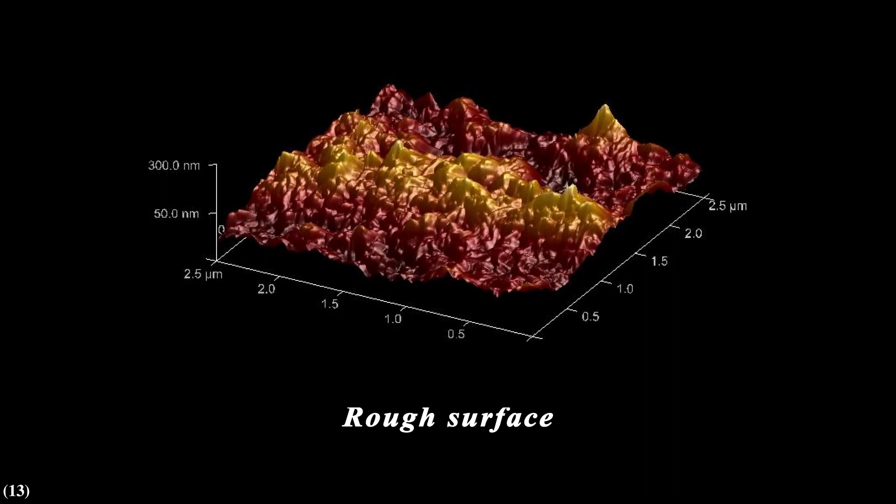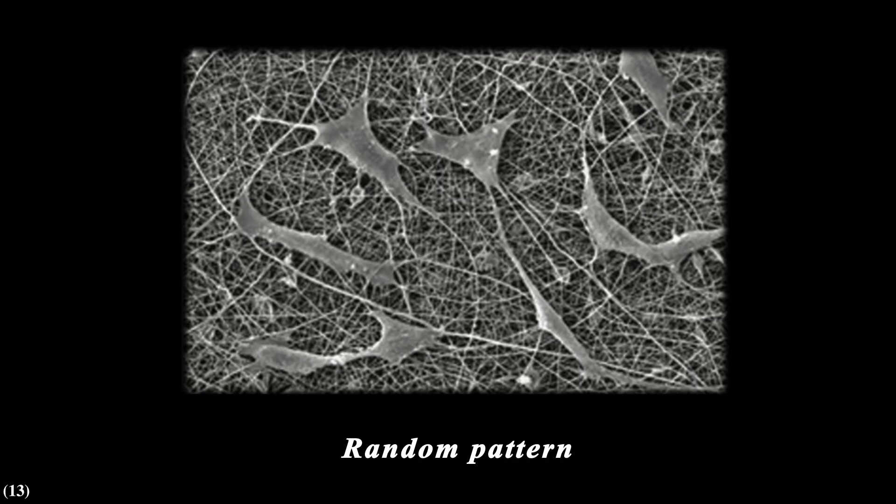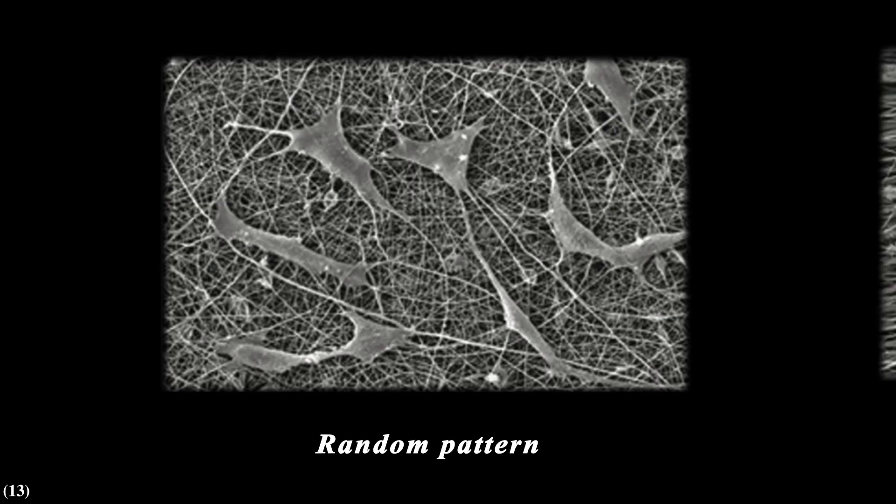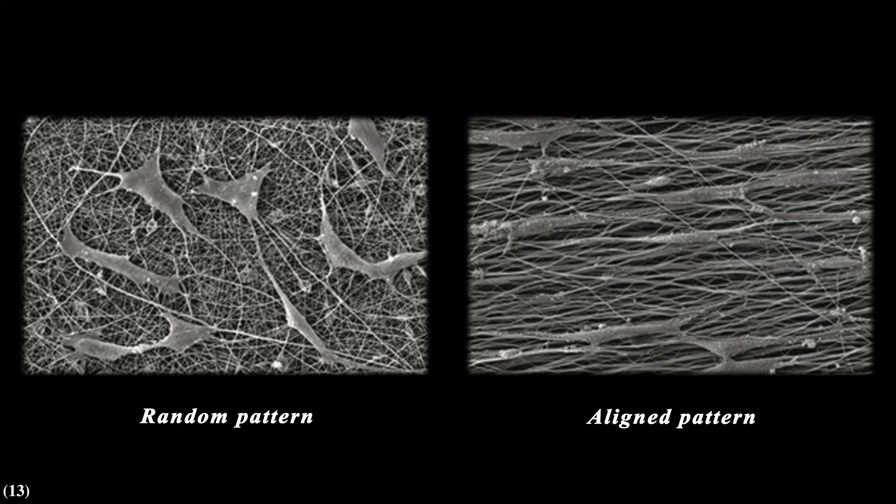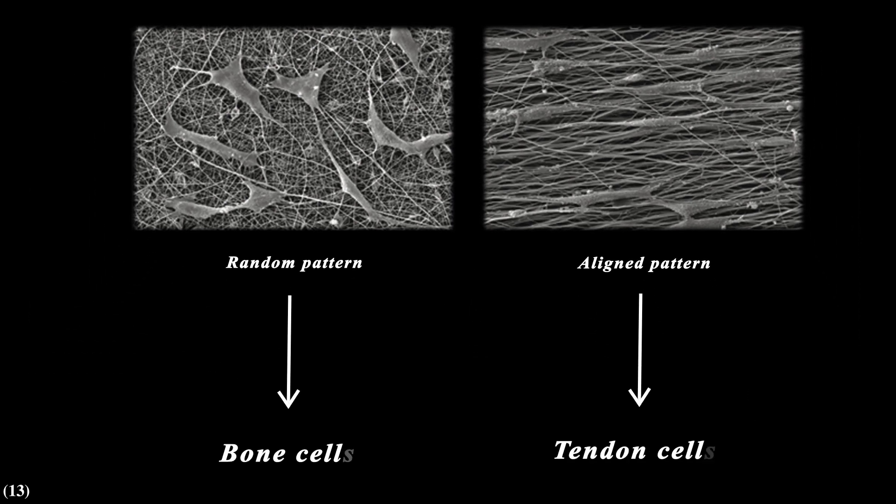For example, we can culture our stem cells on a random topology like this, or we can culture them on aligned fibers. Look how the same cell has different shapes and sizes on the same biomaterial, but a different surface pattern. The first one, which was cultured on the random surface, differentiated to bone cells, but the stem cells on the aligned fibers differentiated to tendon cells.